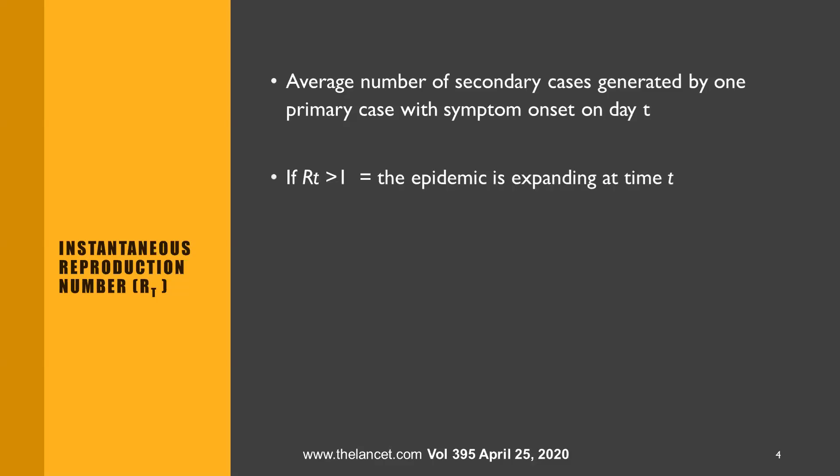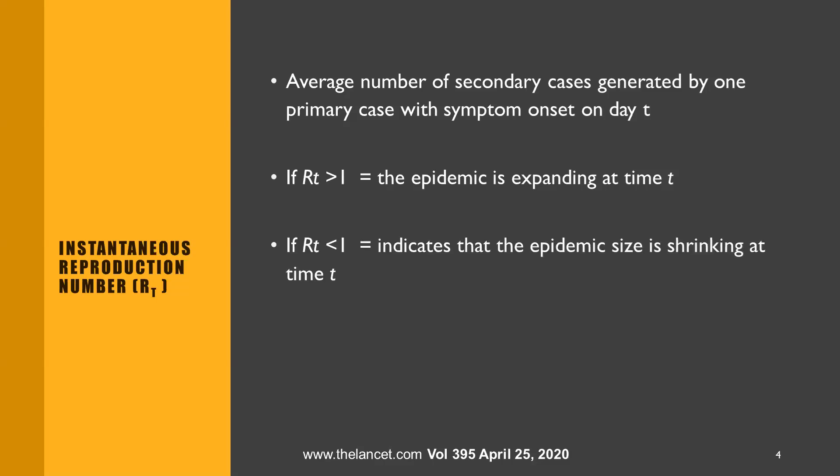If RT is more than one, we know the epidemic is expanding at that specific time. If RT is less than one, it indicates the epidemic size is shrinking at time T. Based on this RT value, which is regularly calculated during any pandemic, we know which way the epidemic is progressing.